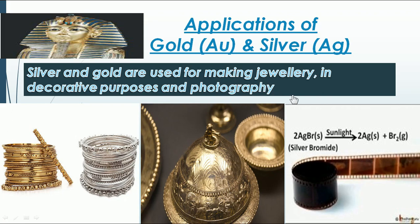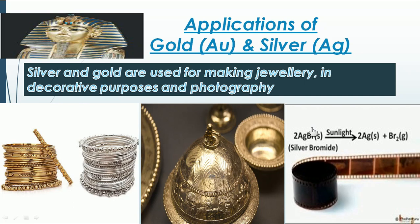Silver is also used in photography. The silver compound silver bromide is used — when silver bromide is exposed to sunlight it becomes silver and bromine. So when a film is coated with silver bromide and sunlight falls on it when a picture is captured, the silver bromide gets changed into silver and it records the picture. So silver is used in photography as well.